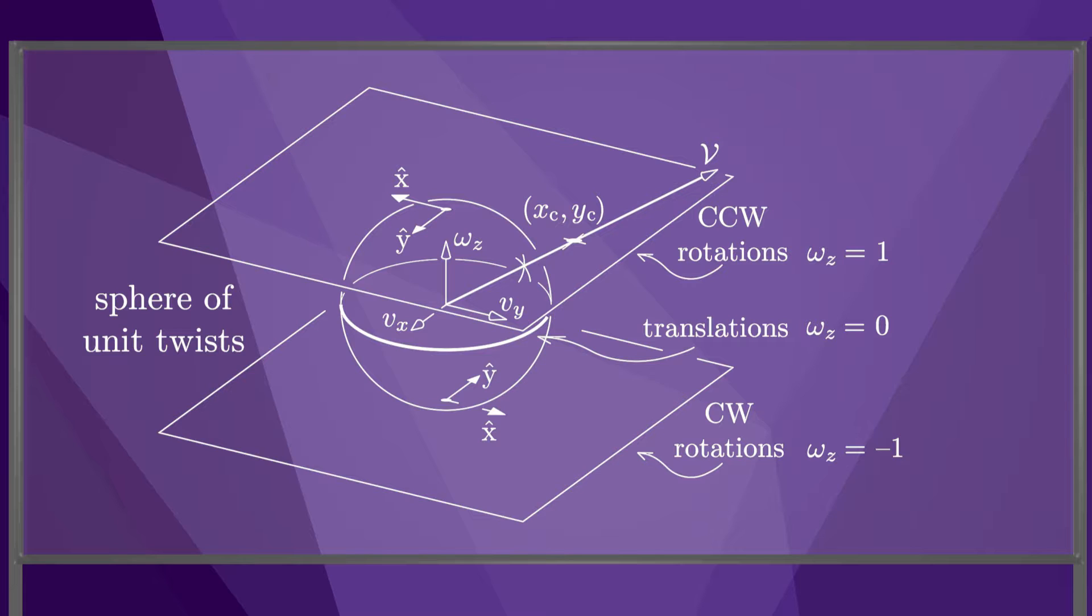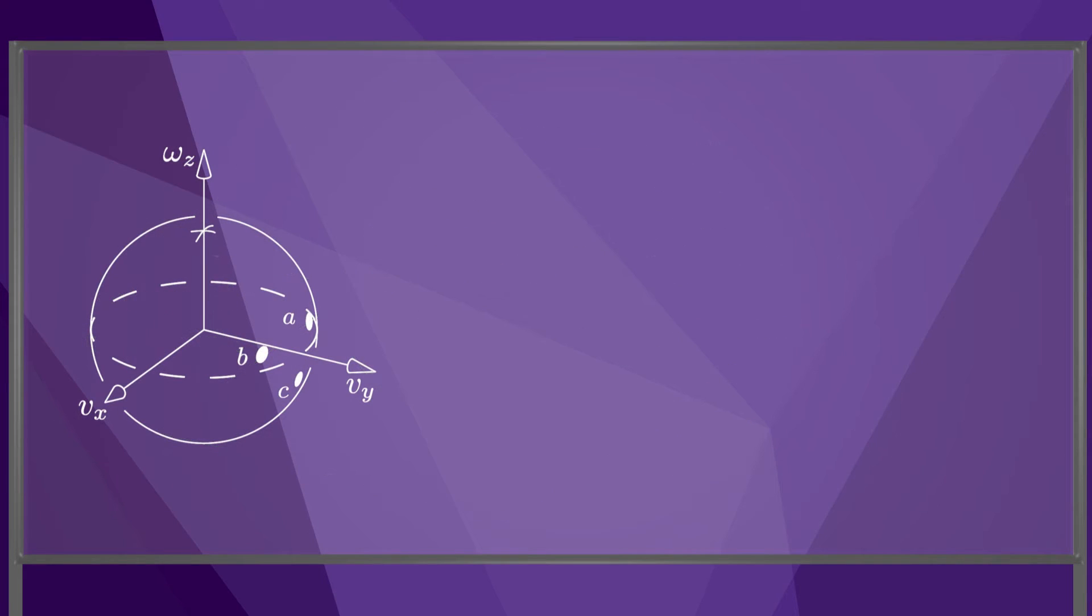If the twist has no angular component, then it can be thought of as a rotation center at infinity, as we'll see in a moment. Now consider three unit twists written a, b, and c, and their mapping to three rotation centers. The rotation centers a and b have positive labels, while c has a negative label.